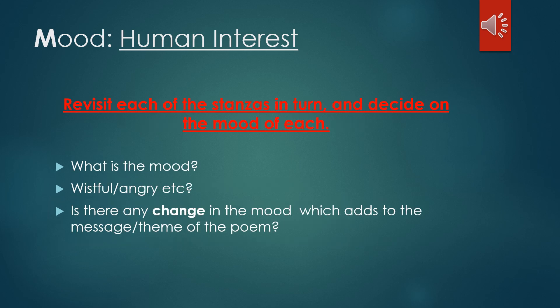Once we've looked at the about section, the next section is the M in AMITY for mood. Thinking back to Human Interest, in that first lesson we collected together some adjectives to describe the mood of the piece. Pause the video again and revisit each of those stanzas in turn and decide on the mood of each stanza. Pick out a nice adjective to describe it and think about the questions on screen to assist you.